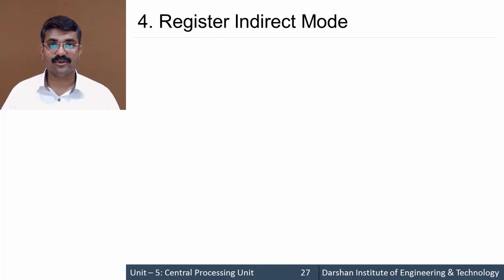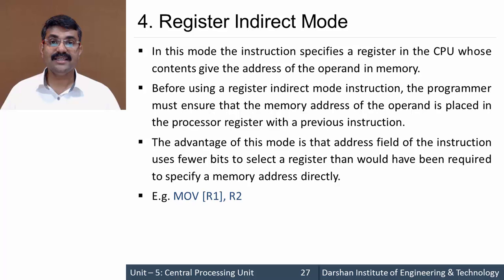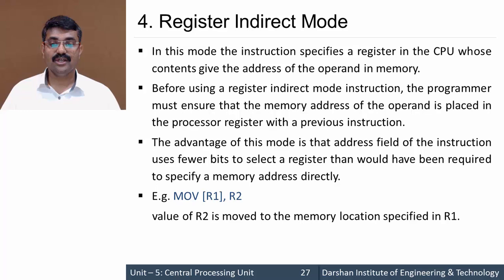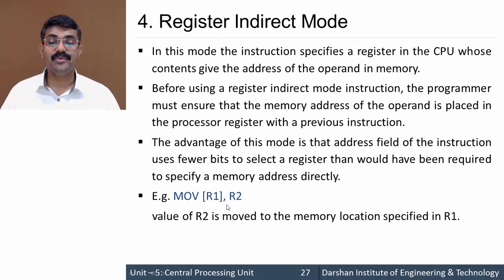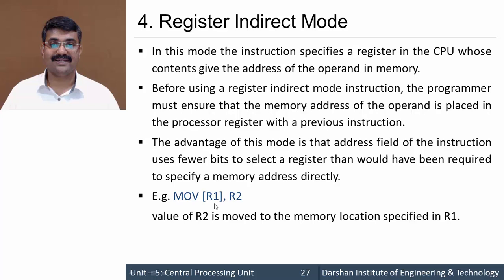The next mode is register indirect mode. Here the operand is a register, but indirect means the register contains some address and the operand is located at that address. For example, MOV [R1], R2 — the content of R2 will not be copied directly to R1, but will be copied to the memory location whose address is stored in R1. So R1 works as an indirect register, containing the address where the content of R2 is to be placed.